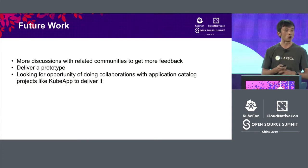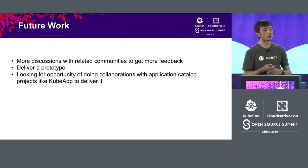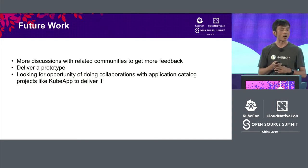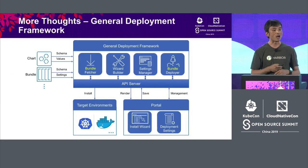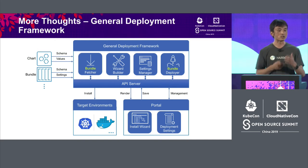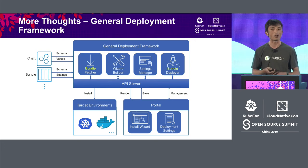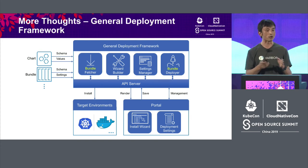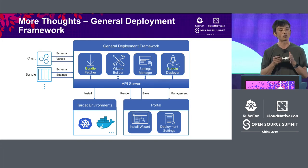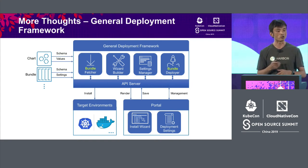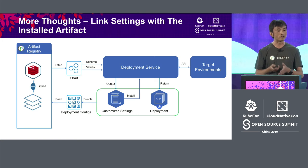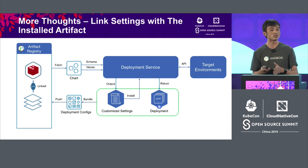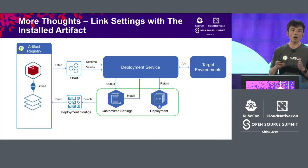Looking ahead into the future, we consider having more discussion with the community and delivering a roadmap. We will also find some opportunities with open source projects, including Kluver apps, and will deliver these features jointly. In terms of more thoughts, apart from chart, such a deployment framework can be general, and we can support all of the bundles and related settings, even with or without the schema. Without schema, we can inject the schema. It is not only pure values — it can be a wizard-based installation.